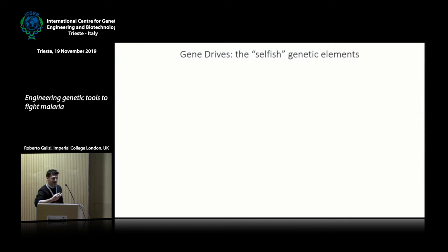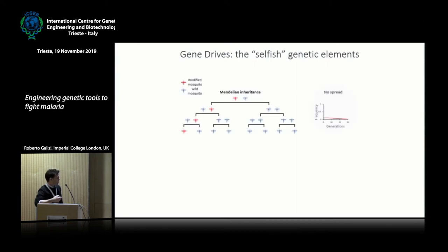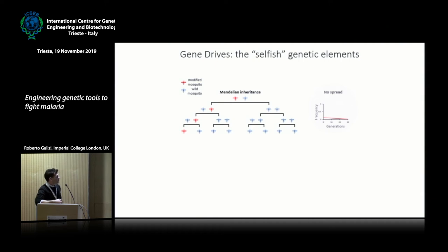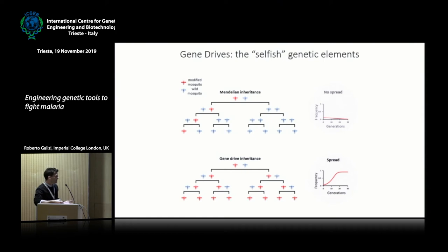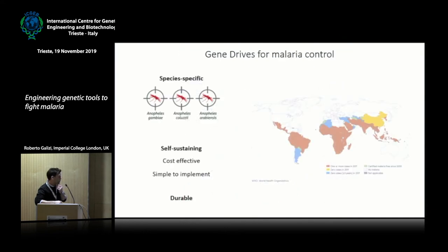So moving on to the actual technology — what are these selfish genetic elements, these gene drives? Normally, Mendelian inheritance tells us that if you have a transgene inserted in mosquitoes, after mating with wild-type mosquitoes it will be inherited by 50% of the progeny. So if you released such a genetic element in a population, it would not increase — it would remain stable, and if it infers a minimal fitness cost, it will gradually decrease over time. But when you have a gene drive element, you expect it will be inherited by the majority of the progeny, and therefore if you release such a mosquito, it will rapidly spread and invade the population.